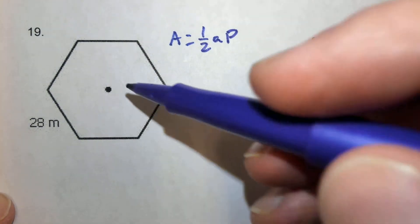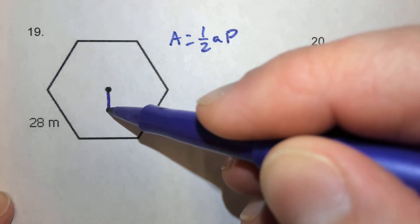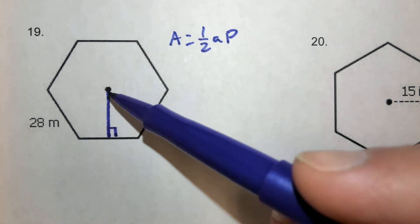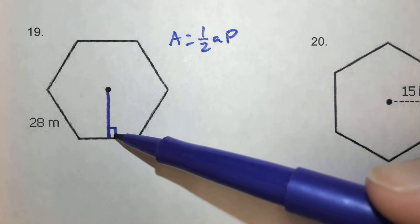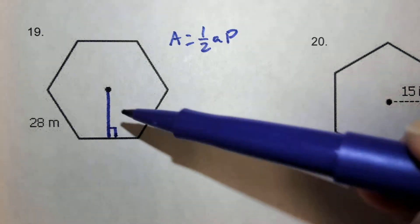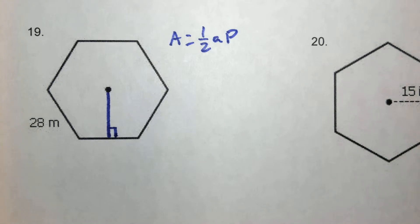Now, if you'll remember, the apothem is the distance between the center of the circle to the side of the circle, and of course that meets at a perpendicular. That's perpendicular to the side, which creates a 90-degree angle, and we're going to use that to our advantage by creating a right triangle here to solve this problem.